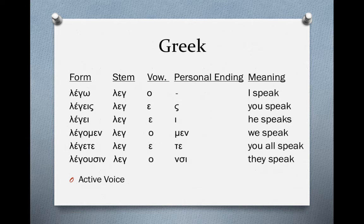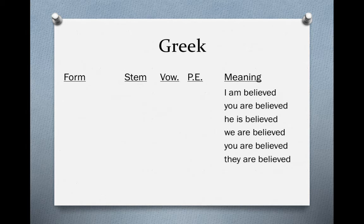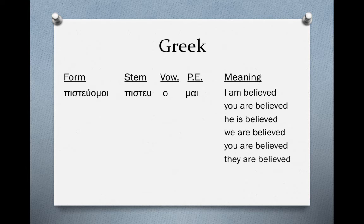Now we'll look at the passive voice using the verb 'pistoumai' as an example. The stem is 'pistou.' These also have a connecting vowel, and the personal ending is -mai. Again the personal ending tells us person and number — first singular, which in English is 'I.' Since this is a passive verb, we include a form of 'be' with our translation, plus the past participle form of the verb: 'I am believed.' How do we know it's passive? The personal ending -mai not only tells us first person singular but also signals a passive verb. So 'I am believed.'